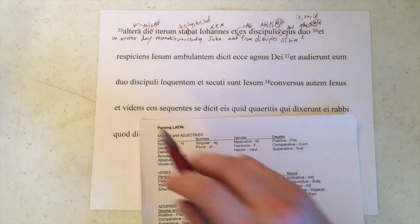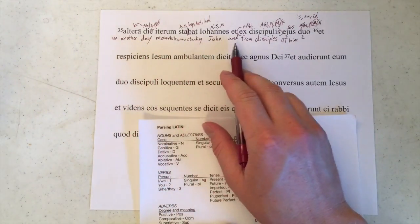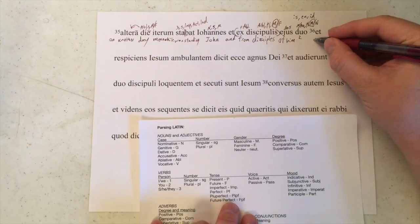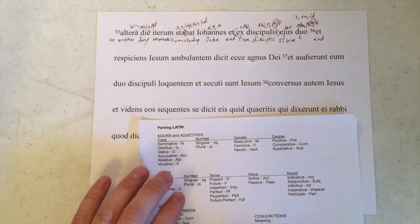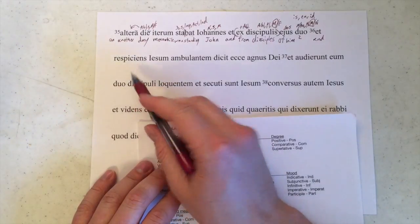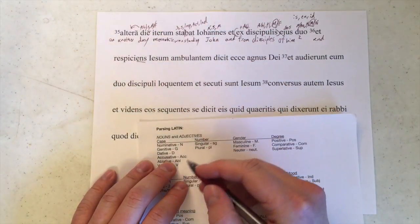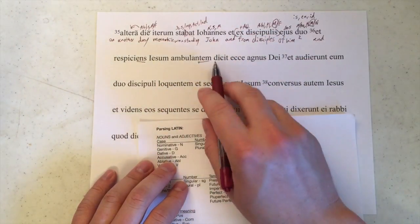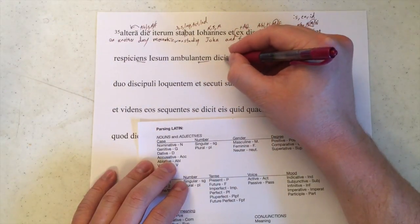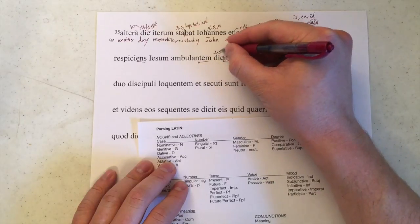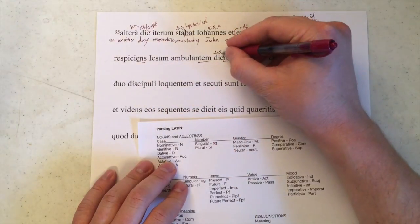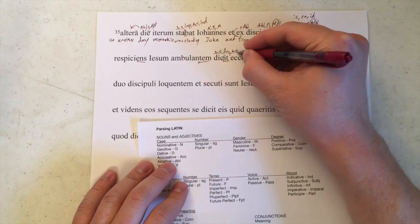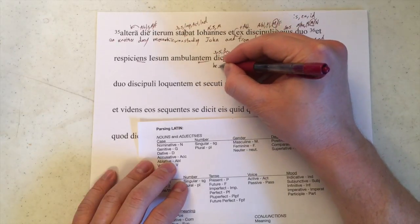So that is verse 35: 'On another day, meanwhile, John was standing, and two from his disciples.' Now verse 36. I want to find our verb again. Respiciens doesn't have a verbal ending — instead we can see it's a participial adjective. Iesum is not a verb. Ambulantem is also a participial adjective. Dicit here is our verb finally. It tells us this is third person singular, present stem, third conjugation, active and indicative — 'he says.'